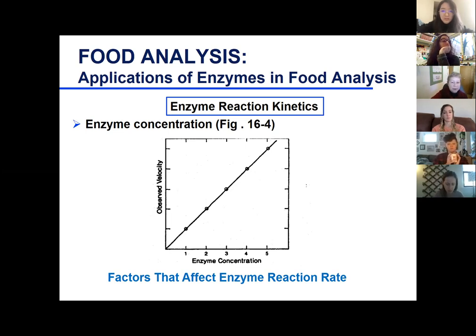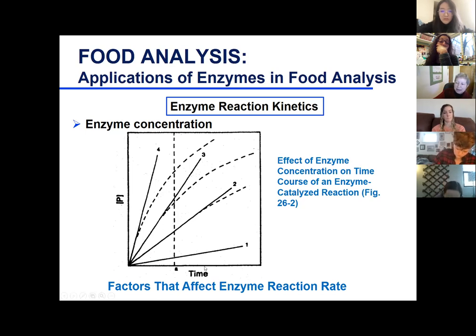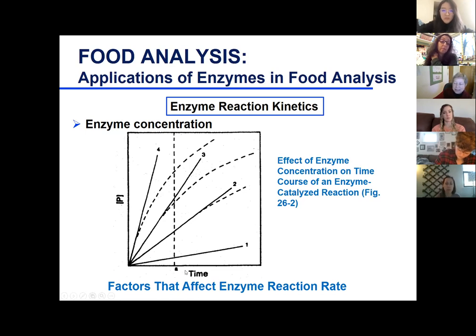Enzyme concentration affects the Vmax. As we increase enzyme concentration, we increase the velocity of the reaction. But what enzyme concentration should we use? This diagram shows four possibilities — concentrations one, two, three, or four — increasing enzyme concentrations — plotted with time and the amount of product generated. The dashed lines are the actual measured values, and the solid lines are the tangent lines drawn along the straight portion of each curve.